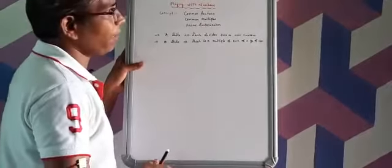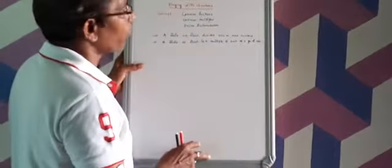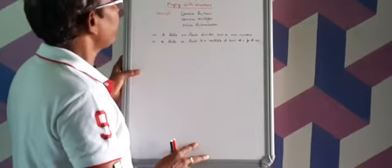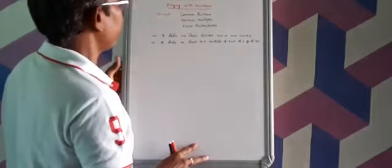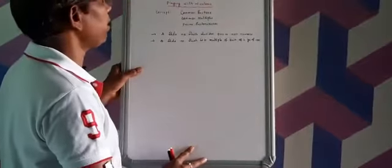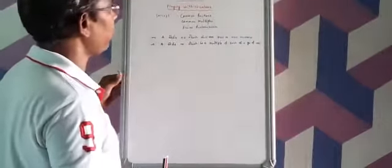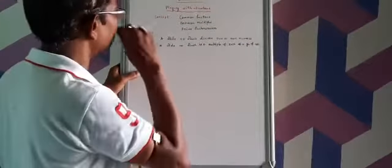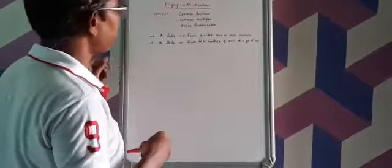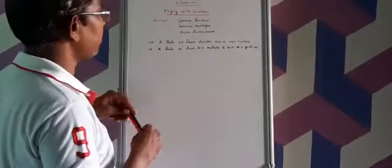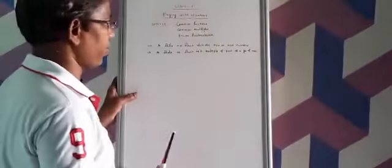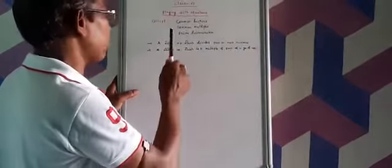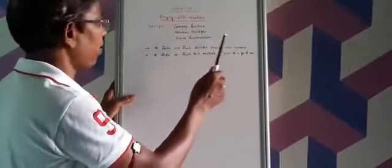Welcome to Kendra Vidyalaya Murgavadi. Today we are going to discuss a chapter — Class 6 Mathematics: Playing with Numbers. The concepts we are going to discuss in this class are Common Factors, Common Multiples, and Prime Factorization. We will discuss one by one what is a Common Factor, what is Common Multiples, and what is Prime Factorization.